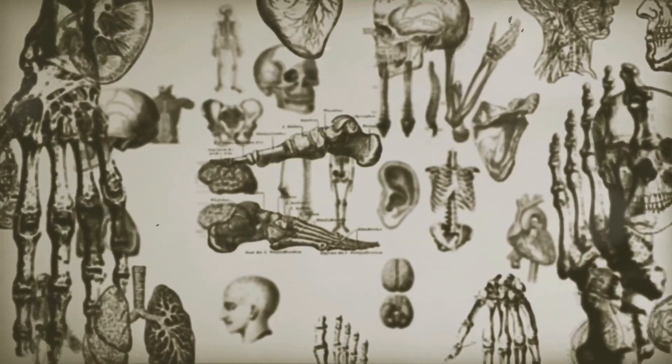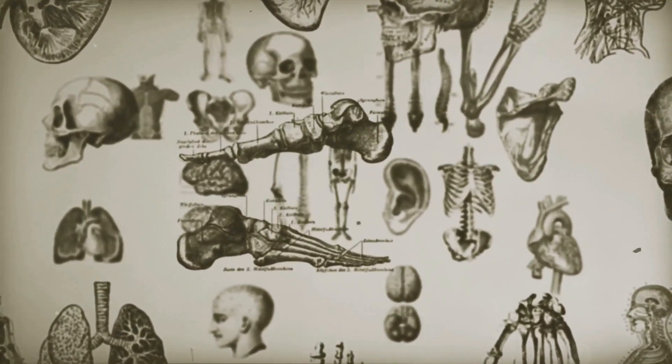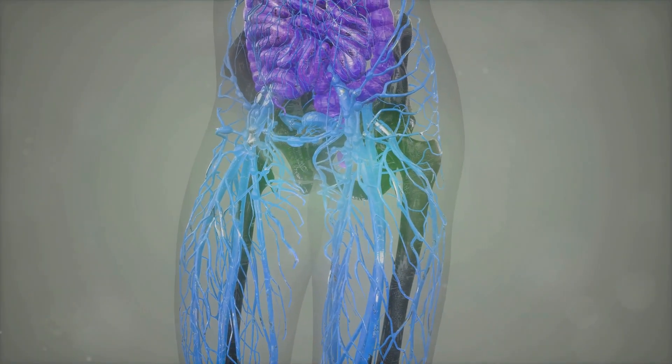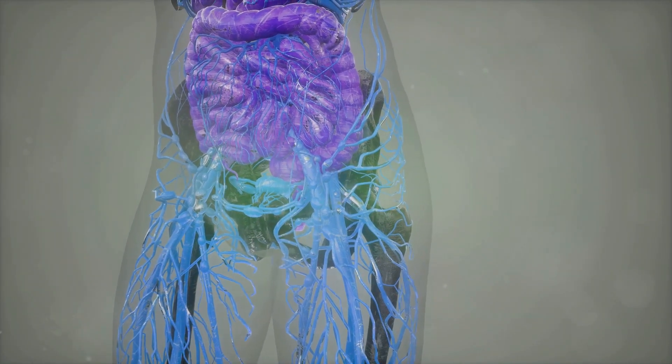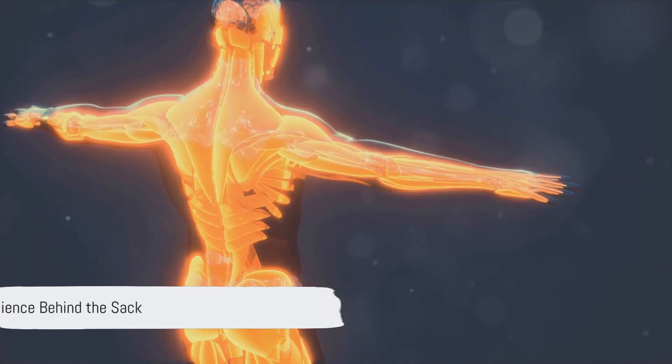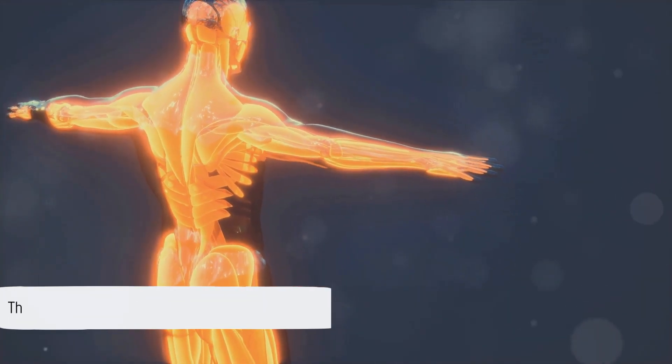So while it may seem a bit odd, this asymmetry is a testament to the brilliance of evolution. It's a survival tactic designed to protect, regulate, and facilitate the vital function of reproduction. In essence, this seemingly odd detail of your anatomy is actually a brilliant survival tactic.